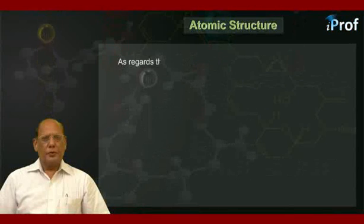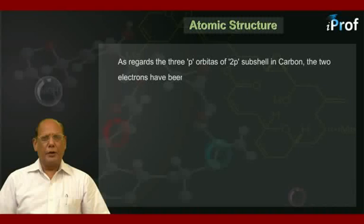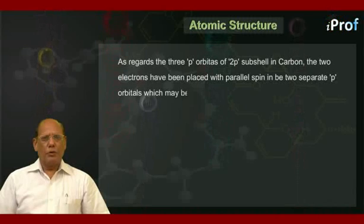As regards the three p orbitals of 2p subshell in carbon, the 2 electrons have been placed with parallel spin in 2 separate p orbitals, which may be any 2 of the 3.